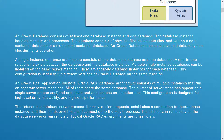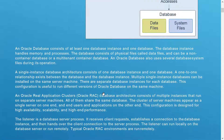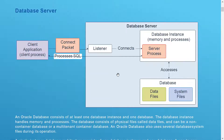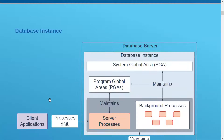The listener is a database server process — it is a component of the database server. It receives client requests, establishes connections to the database instances, and then hands over the client connection to the server process. The listener can run locally on the database server or run remotely. In a typical Oracle RAC environment, the listener runs remotely. In a single instance database it runs on the same server, while in RAC it could run on any of the remote database servers.